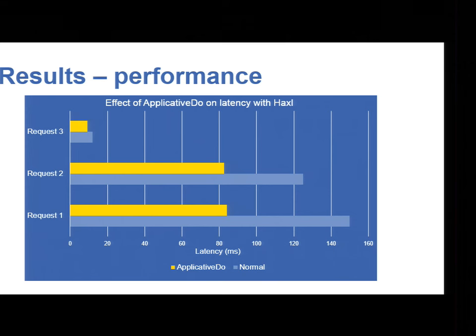So I've got some results here. We tried three different request types on our Sigma implementation. Each of these request types is doing something slightly different, so they have different latency characteristics. Request three, which had a very low latency, saw some improvement when we turned on applicative do. And these longer requests, the requests that took a longer amount of time, saw a bigger improvement. But the improvement was quite dramatic. So we went down from 150 milliseconds down to about 90.